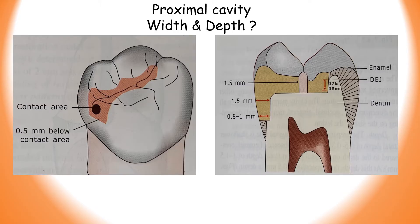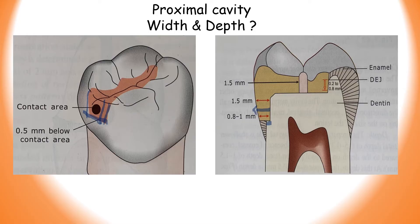For proximal cavity width, the facial and lingual proximal margins extend beyond the contact area into their respective embrasures. The occlusal-gingival depth is 0.5mm below the contact area, giving the gingival seat a clearance of 0.5mm from the adjacent tooth. The axial depth is 0.2 to 0.8mm beyond the dentine, which measures 0.8 to 1mm from the external tooth surface.